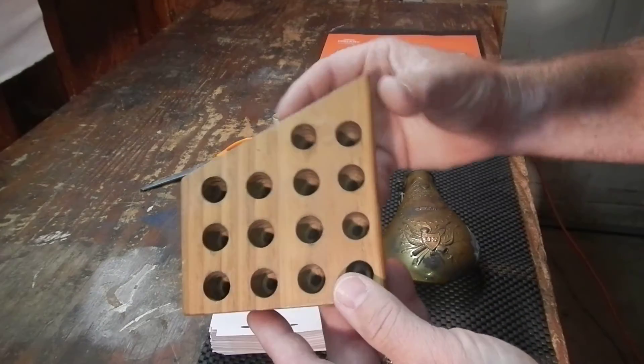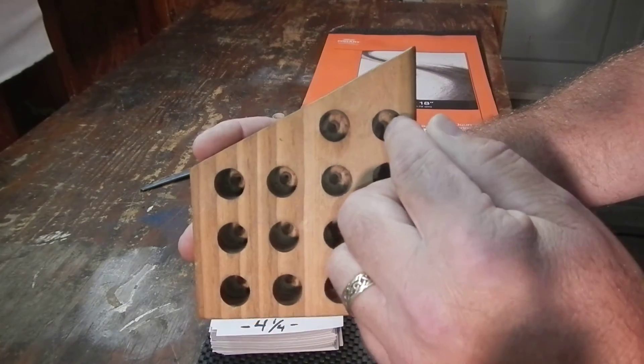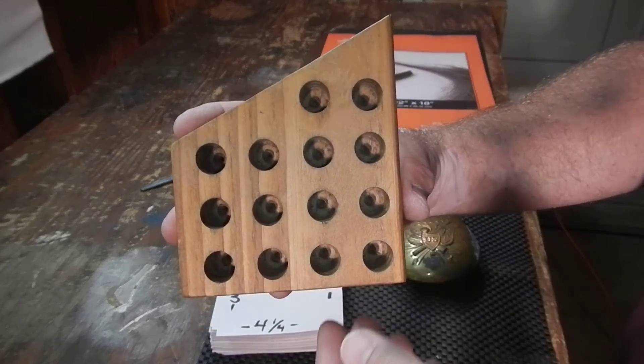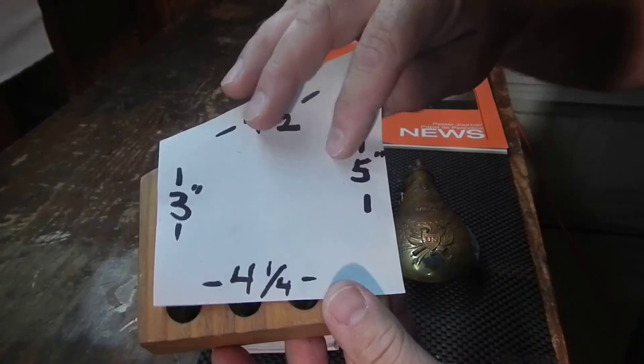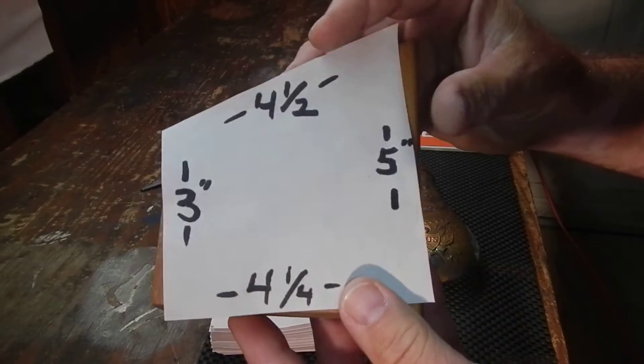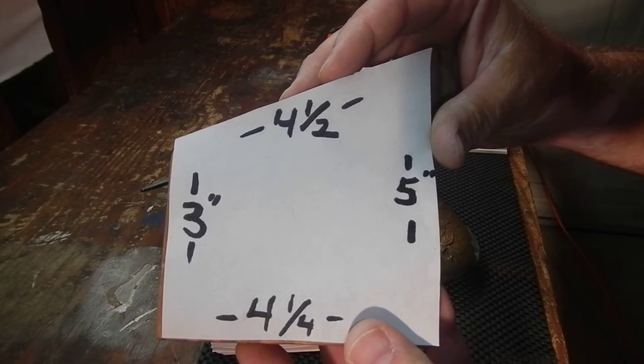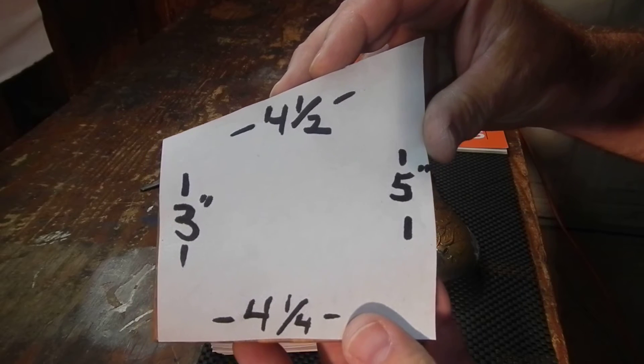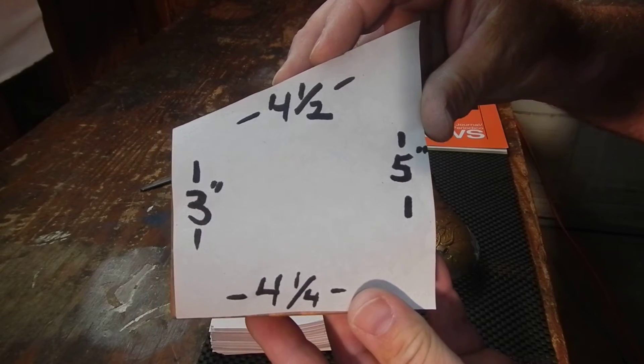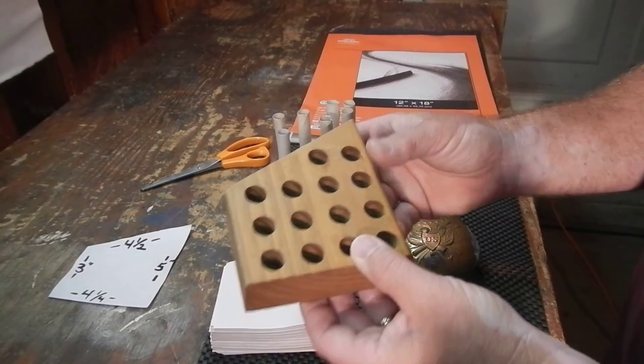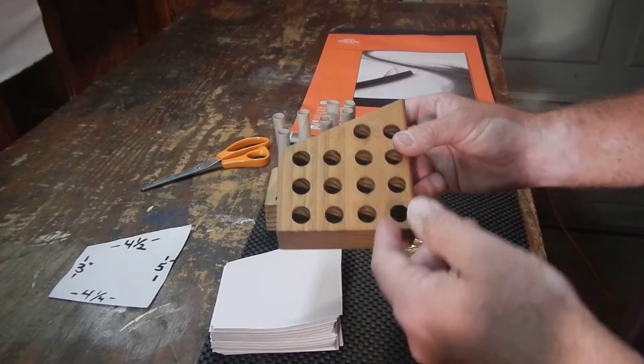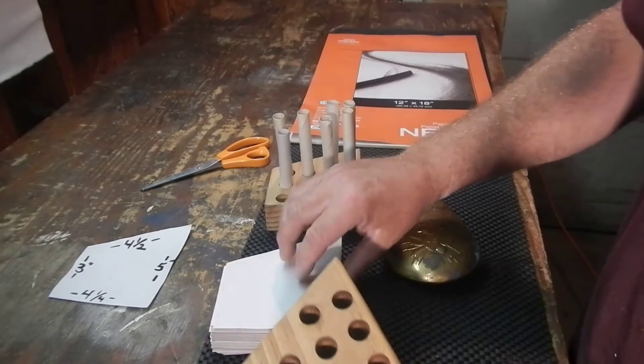This is the dimensions of it right here, and as you can see that's used as a guide to cut out your paper. Here's the dimensions. So what you do is trace out the paper, cut a bunch of them out so you have them ready to go.